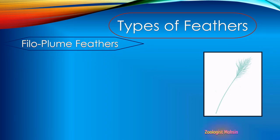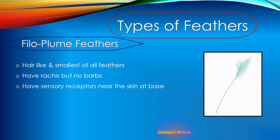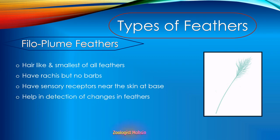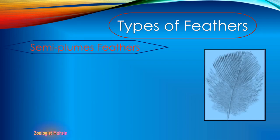Next type is the filoplume feathers. They are hair-like and the smallest of all feathers. They have a rachis but no barbs — you can observe a few barbs at the tips. They have sensory receptors near the skin at the base. These sensory receptors help in the detection of changes in feathers, such as whether the feathers are reduced in number, enlarged, or it is time to replace them.